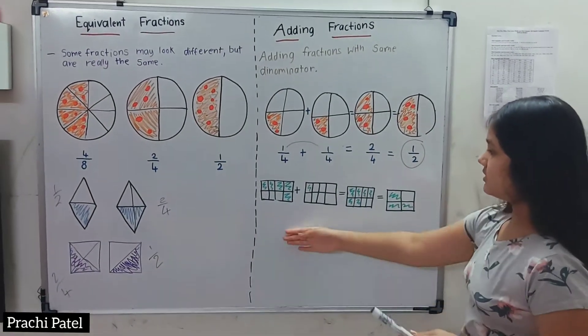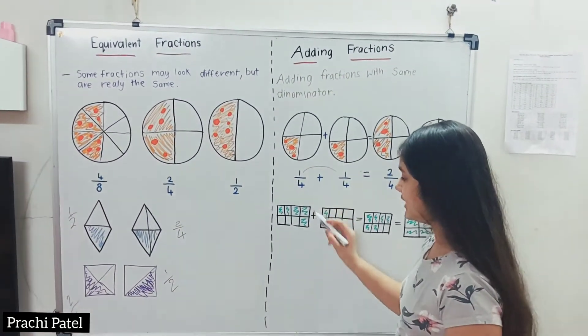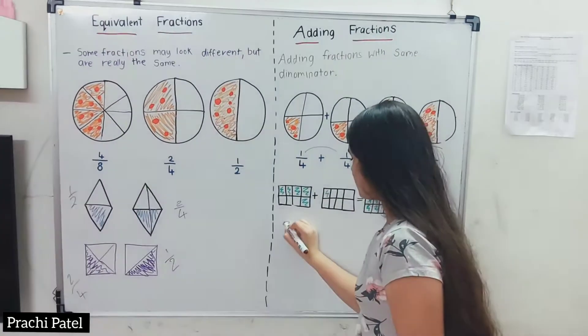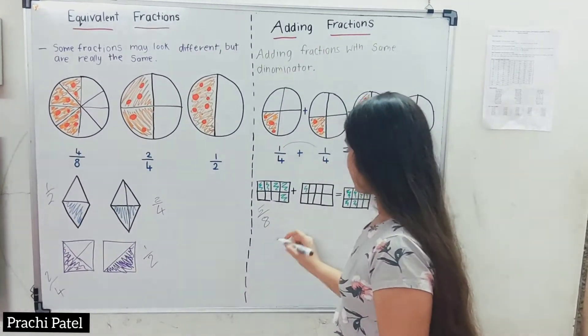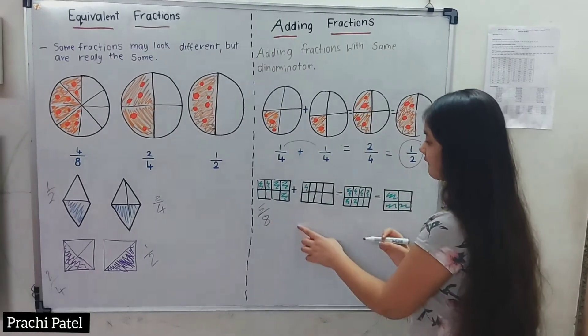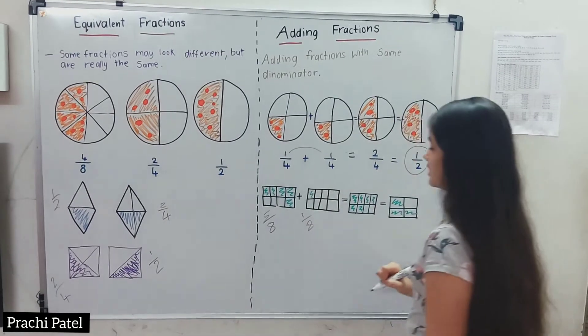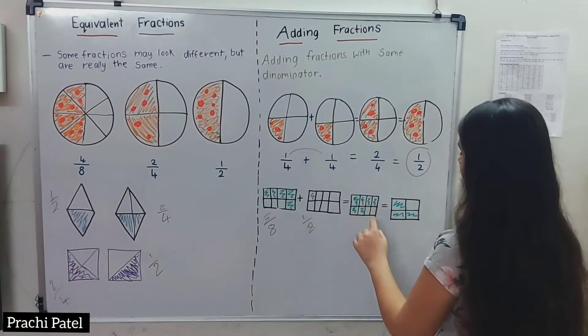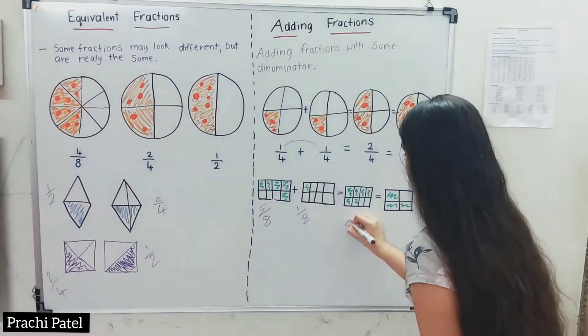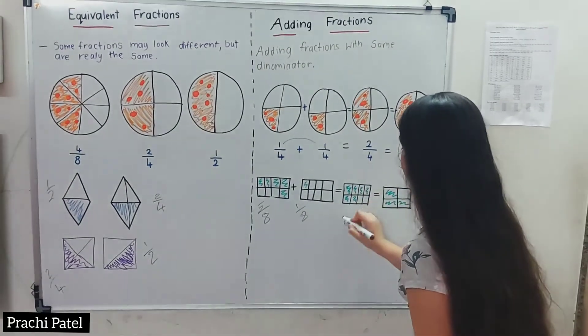Now let's do this one. We have 8 pieces and 5 are colored, plus we have 8 pieces again and 1 is colored. So 5/8 plus 1/8. Over here we have 8 pieces and 1, 2, 3, 4, 5, 6 are colored total.